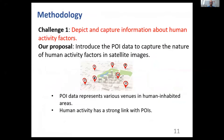The first challenge is how to depict and capture information about human activity factors in satellite imagery. To resolve that challenge, we use the POI data to capture the nature of human activity factors. POI data can reflect human activity in a given region. For example, if a region has lots of restaurants, this suggests that many people are dining in this region.